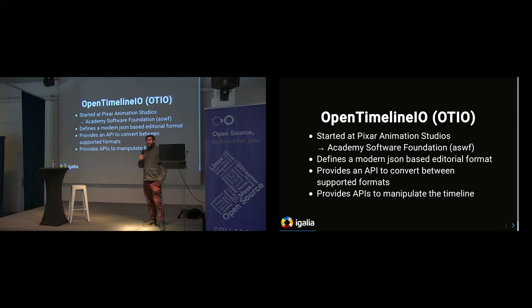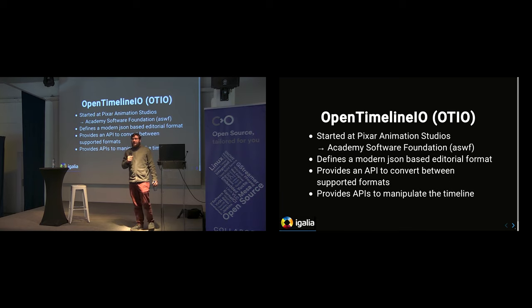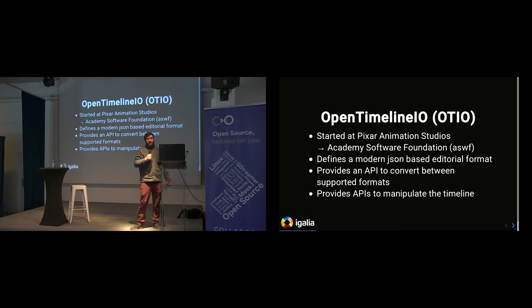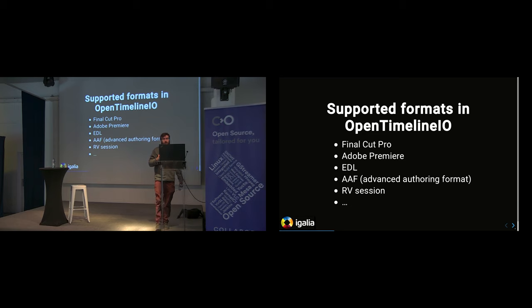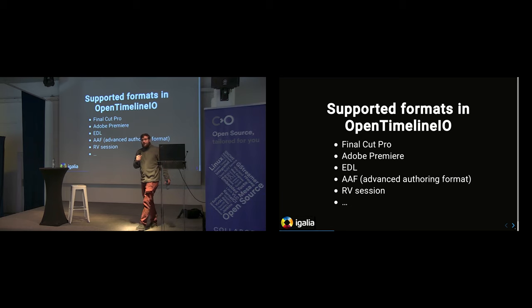OpenTimelineIO provides an API to go from one format to an internal representation of the timeline, and then allows you to convert it to some other format. It also provides APIs to manipulate the timeline — move clips, add effects — and then you can save it and use your tool to play it back or render it. It's in Python, and the core has been ported to C++. It supports many formats such as Final Cut Pro, EDLs, Premiere FCPX files, and AAF format which is used by Avid, so it basically supports all the formats the industry uses.